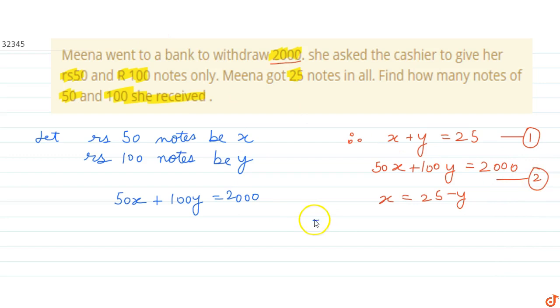So the number of 100 notes is 15. Now, X equals 25 minus Y. This implies that X equals 25 minus 15, so X equals 10.